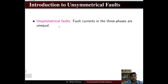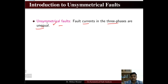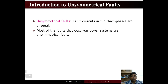What are unsymmetrical faults? The fault current in the three phases are unequal. Whenever the fault current flowing in the three phases is unequal, it is known as an unsymmetrical fault. If the fault currents are equal, then it is known as a symmetrical fault. Most of the faults that occur in power systems are unsymmetrical faults; a smaller percentage are symmetrical faults.